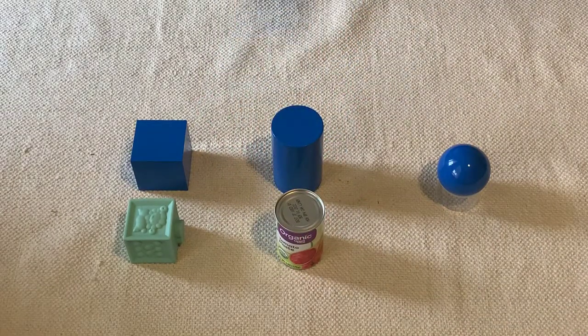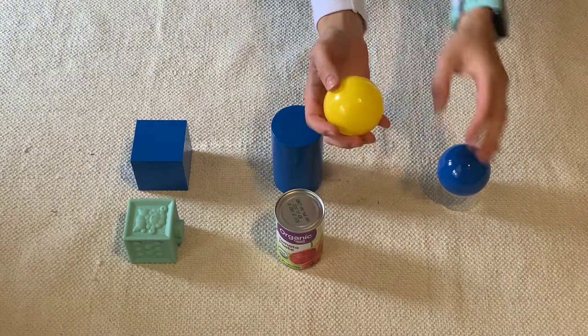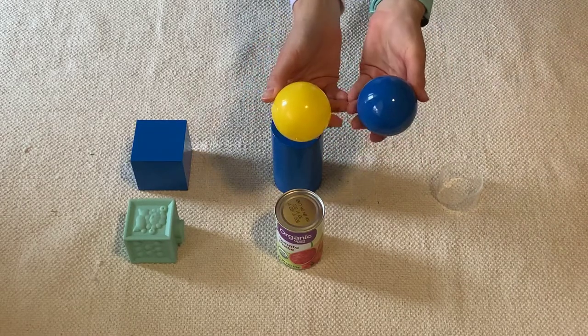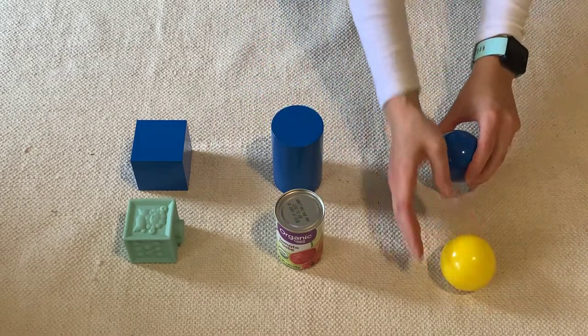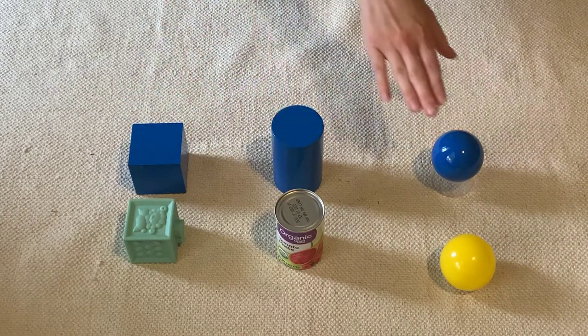And last, I found a yellow ball. Look, the yellow ball is round, just like the sphere. They are both spheres. Cube, cylinder, sphere.